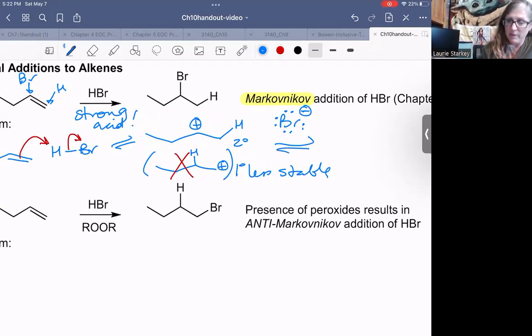So step two is simply nucleophilic attack. The bromide attacks the carbocation, and we end up with our final product. So it's just a two-step mechanism, protonate and attack.